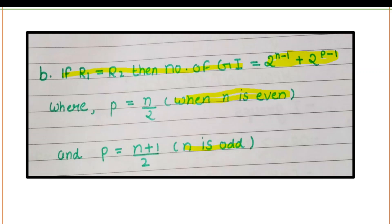If R1 equals R2 — if the starting and ending members of the carbon chain are equal — then the number of geometrical isomers equals 2^(N−1) + 2^(P−1), where P equals N/2 when N is even. If N is odd, then P equals (N+1)/2.